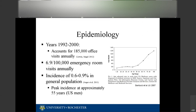In a small observational study from 1992 to 2000, there were close to 200,000 office visits annually for urethral stricture disease. Six out of every 100,000 emergency room visits were from urethral stricture disease, and the incidence is about 0.6 to 0.9% in the general population, with peak incidence around age 55, increasing over time.